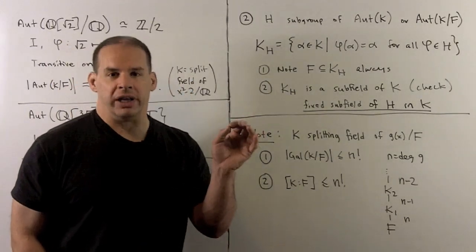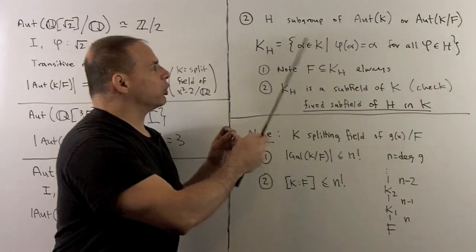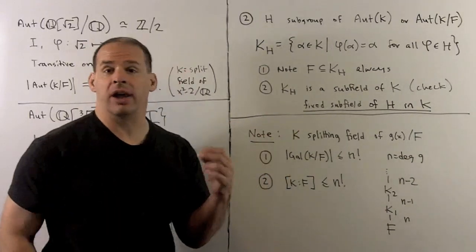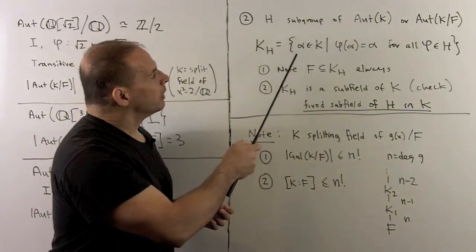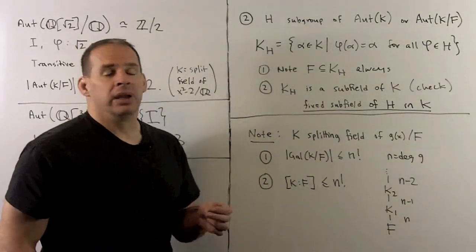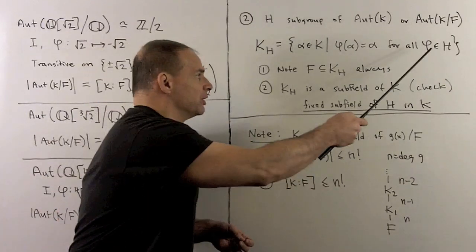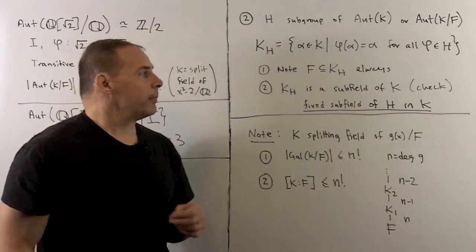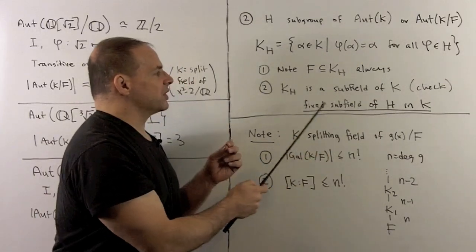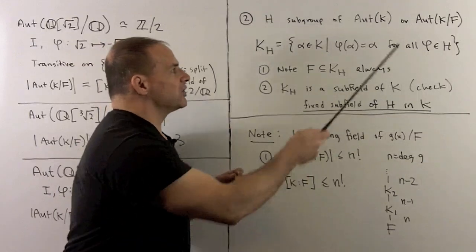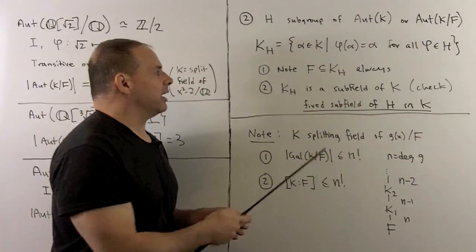We note the other ingredient. If I have H a subgroup of Aut(K) or Aut(K/F), I want to consider K_H — the set of all elements of K that are fixed by every automorphism in H. I'll leave it to you to show K_H is always a subfield of K. We call this the fixed subfield of H in K. And if we're in the case of Aut(K/F), F will always be contained in K_H.